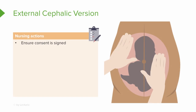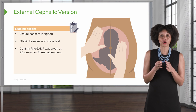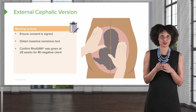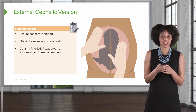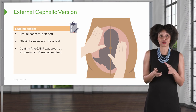So how should the nurse prepare the client for the external version? First, due to the risks we just talked about, it's very important that a consent form is signed. Second, to make sure the fetus is doing okay before we start, the nurse should obtain a baseline non-stress test — we're looking for a reactive strip. Also, double-check the chart and make sure that if the client is RH negative, they have received the RhoGAM shot, which protects against sensitization from an RH positive fetus.